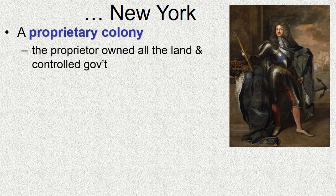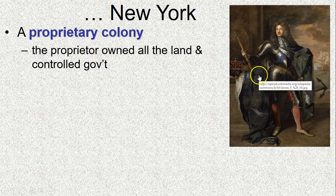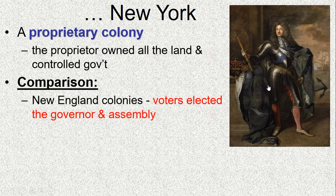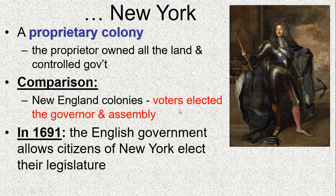New York is a proprietary colony — one of the key terms we need to know. A proprietary colony refers to a proprietor, like someone who owns their own store. The proprietor controlled a huge area of land, established the government, and determined what happened in that colony. Compared to New England colonies, where people voted and elected their governor and assembly, here the proprietor directed everything — the government and the political system.